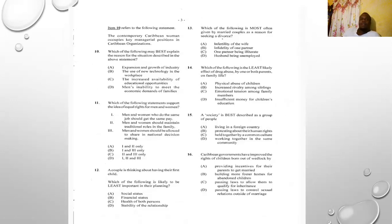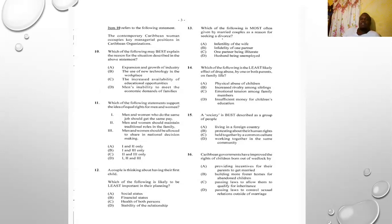Item ten refers to the statement: 'The contemporary Caribbean woman occupies key managerial positions in Caribbean organizations.' Number ten asks which best explains this situation. Options: A) expansion and growth of industry, B) use of new technology in the workplace, C) the increased availability of educational opportunities, D) inability to meet economic demands of families. The answer is C — the increased availability of educational opportunities.